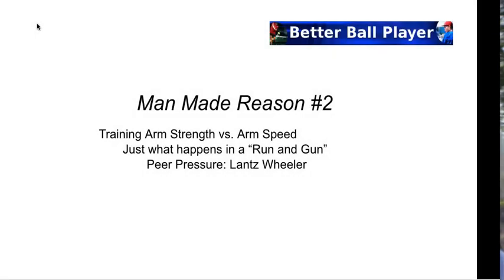Man-made reason number two: we get kids in the off-season and start to train with this idea of arm strength versus arm speed. If arm strength was the deal, then every power lifter and every NFL lineman or linebacker should be able to throw 95 — and we know that's just not true. When we get into a run-and-gun situation, is it a bad thing? Not in and of itself — it can be used as a measuring tool to find leaks. But basically the run-and-gun just builds up a momentum throw and rushes the body a little bit.